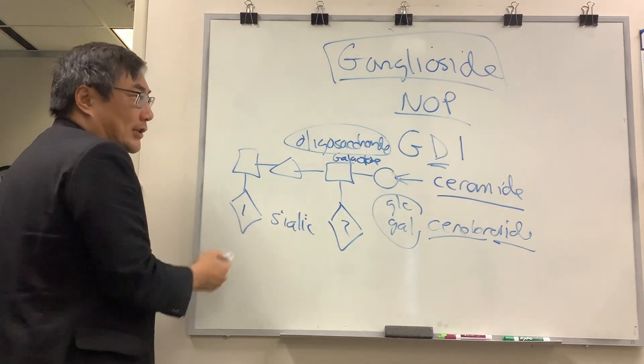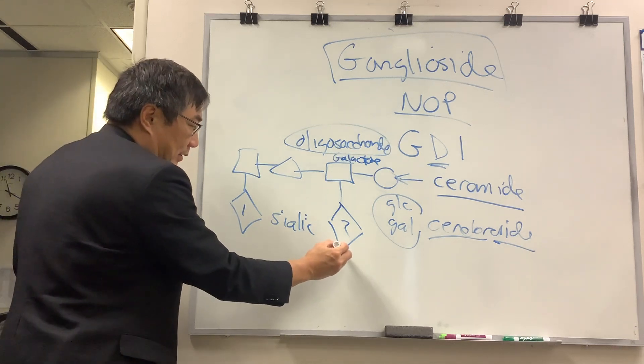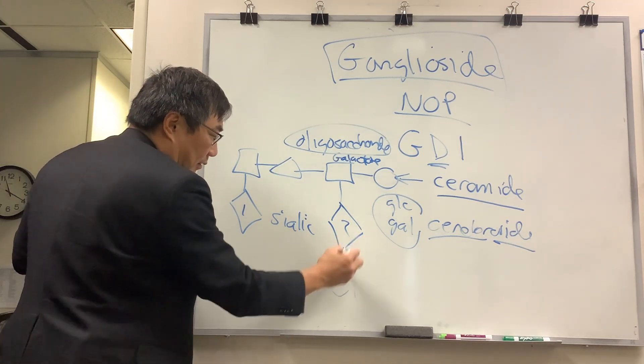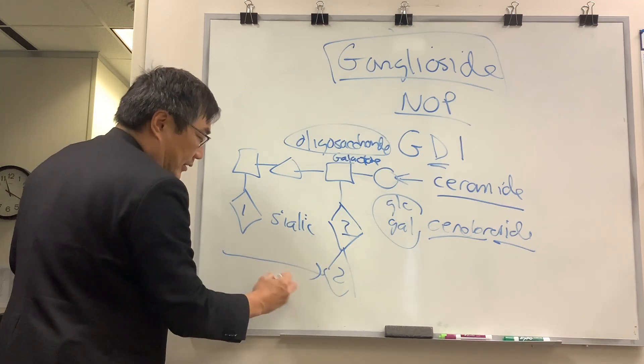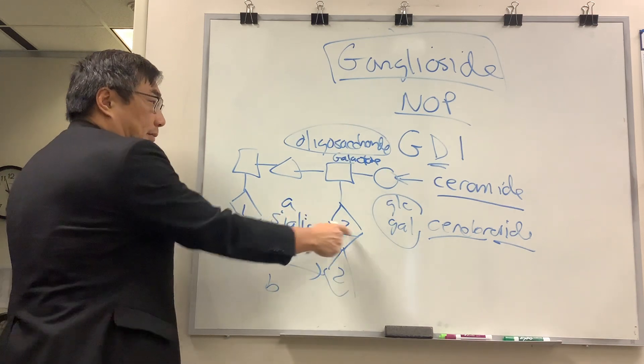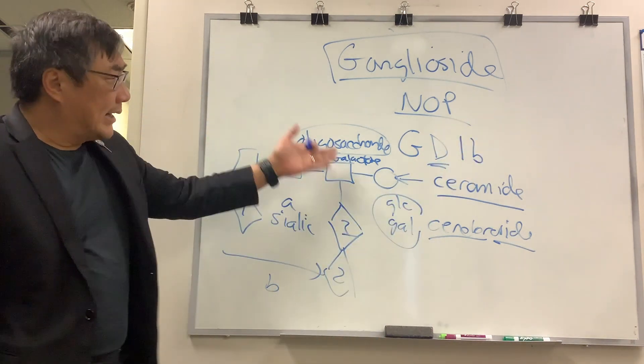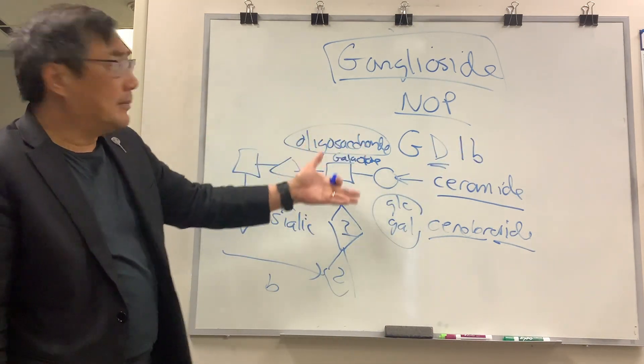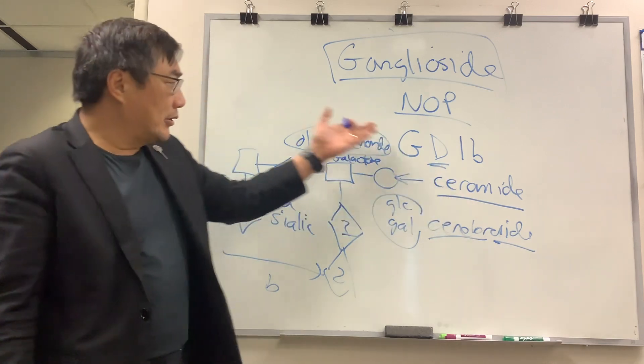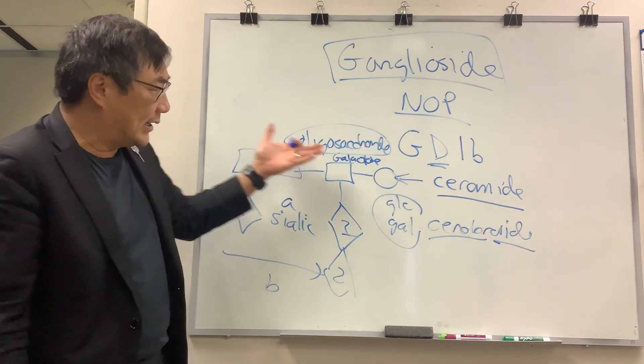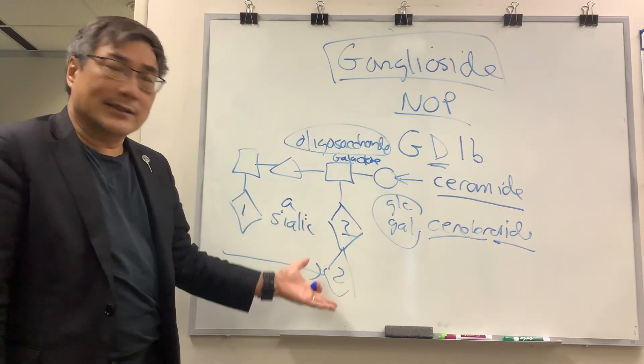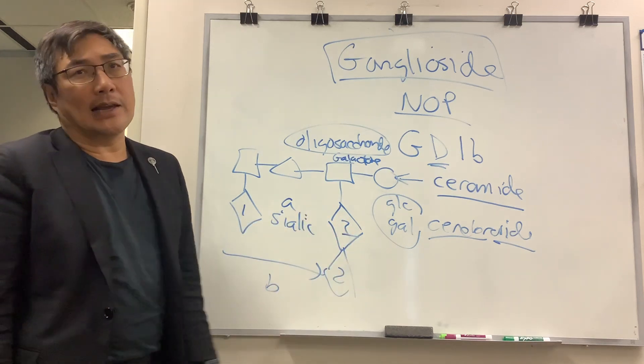But because we have two sialic acids, it can be two in the A row or two in the B row. This is A, this is B. So this would be A, and this one is B. You need to know how to name the ganglioside based on the core molecule, the oligosaccharide chain, the number of sialic acids, and the row in which the sialic appears.